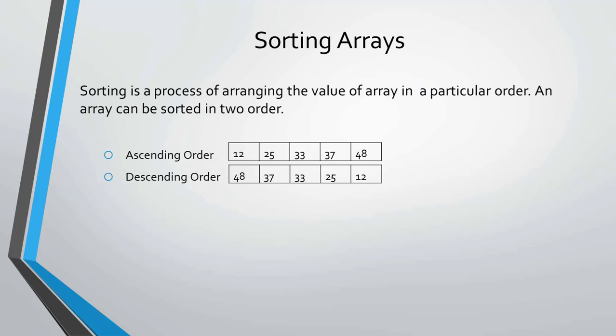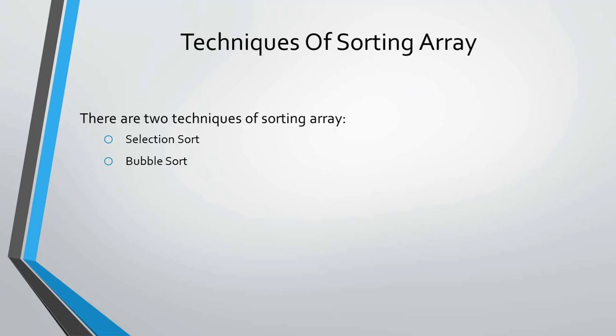Sorting is the process of arranging the values of an array in a particular order. An array can be sorted in two orders: ascending order and descending order. You can see on the screen the example of ascending and descending order. There are two techniques of sorting an array: selection sort and bubble sort.